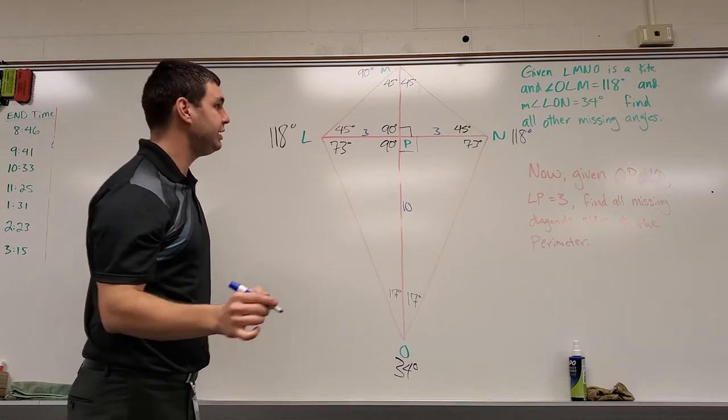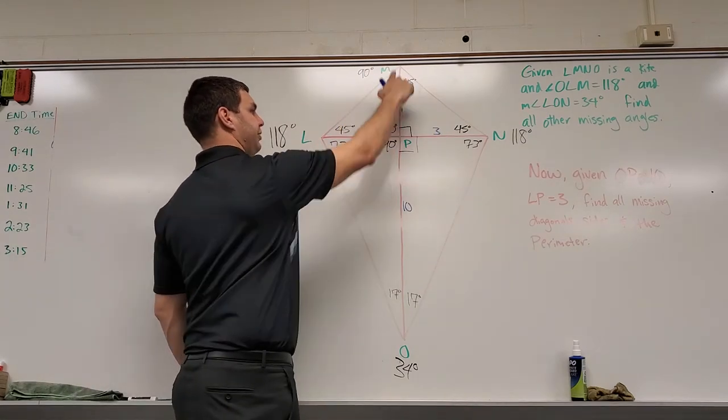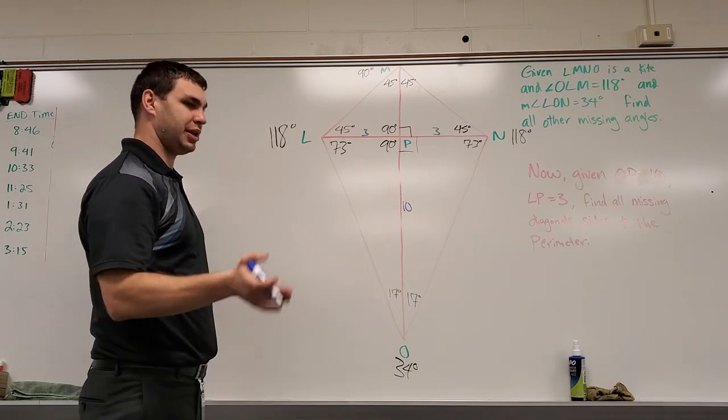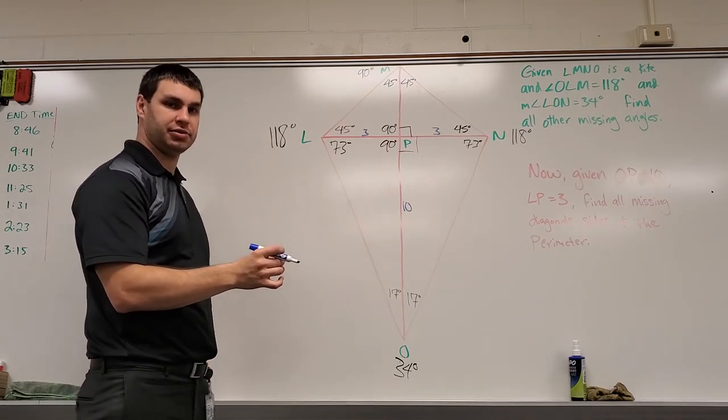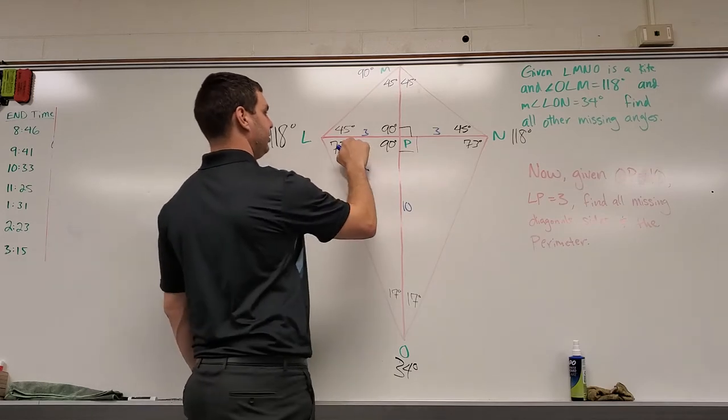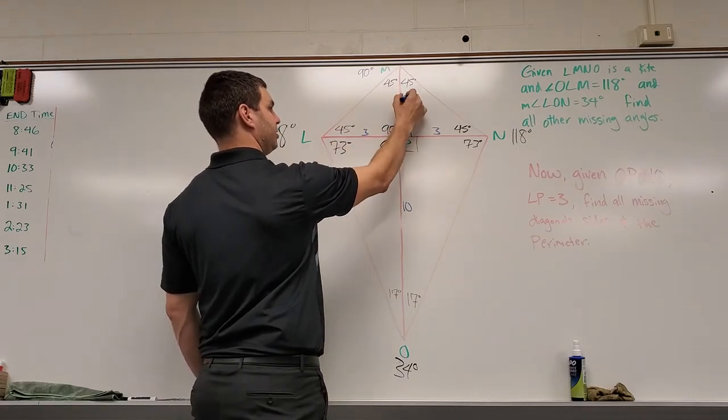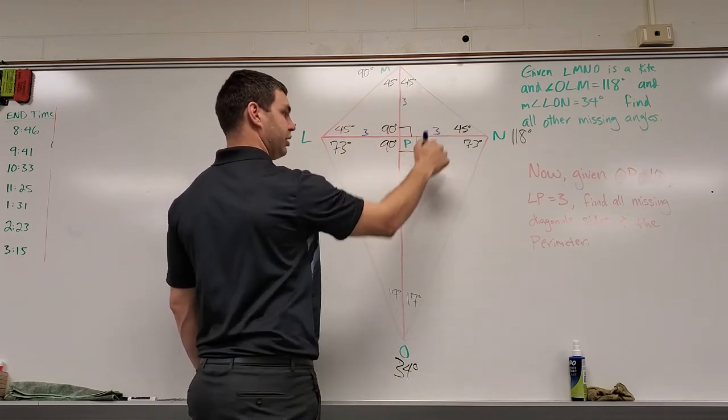The other thing I'm seeing is these top ones are 45-45-90 right triangles. If you remember back to our unit on special right triangles, if this is a 45-45-90 and this is 3 for the one leg, the other leg also has to be 3. And that's true over here as well, 3 and 3.